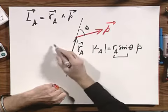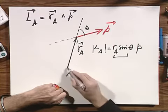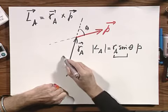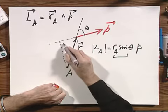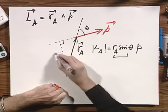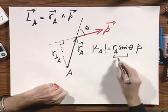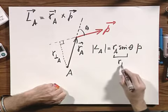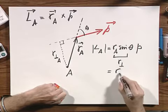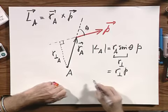And R A sine theta is the vertical distance from point A to the line of P. This we very often call R perpendicular relative to A, which is this part. So you also see sometimes R perpendicular times P.